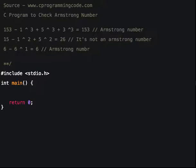This is a bigger number. Let's look at the example here: 1634 has four digits. So 1 to the power of 4 plus 6 to the power of 4 plus 3 to the power of 4 plus 4 to the power of 4 which is equivalent to 1634.